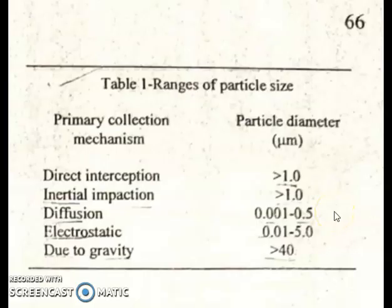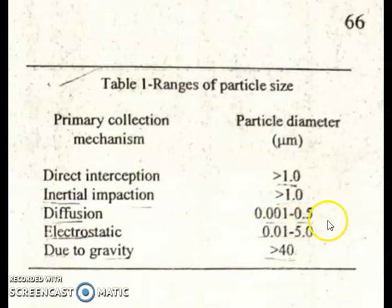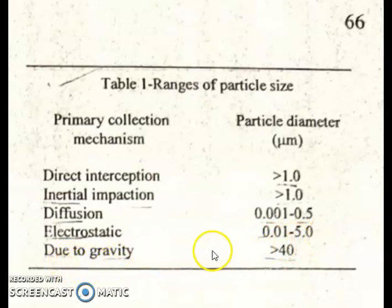This table shows the ranges of particle size for different mechanisms. For direct interception or trapping, the particle size would be more than 1 micron. For inertia deposition, the particle size would again be around 1 micron. For diffusion, small-size particles ranging between 0.001 to 0.5 micron are involved. For electrostatic effects, the range would be 0.01 to 5 microns. And lastly, due to gravity, the particle size is bigger than the others.